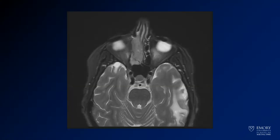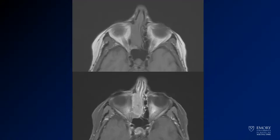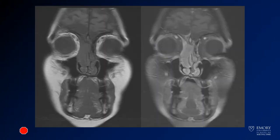Now we have an MR through the same region. This is the T2 fat-sat MR. Here you have pre and post contrast through the same region, and now coronal pre and post contrast.